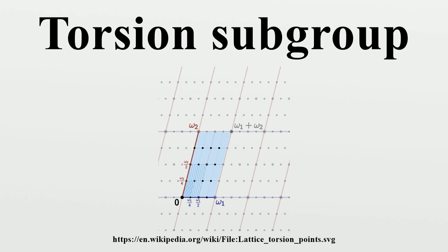As the example of the factor group Q/Z shows, every free abelian group is torsion-free, but the converse is not true, as is shown by the additive group of the rational numbers Q. Even if A is not finitely generated, the size of its torsion-free part is uniquely determined.